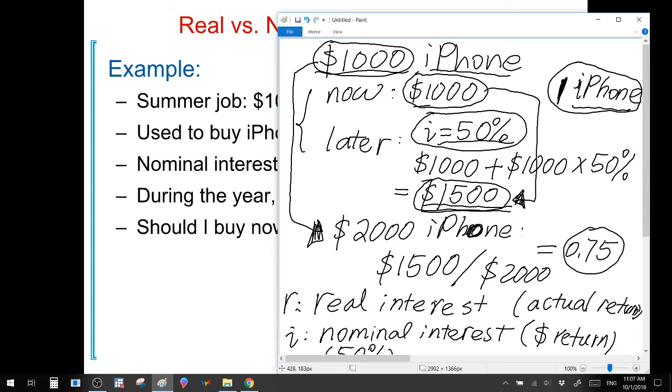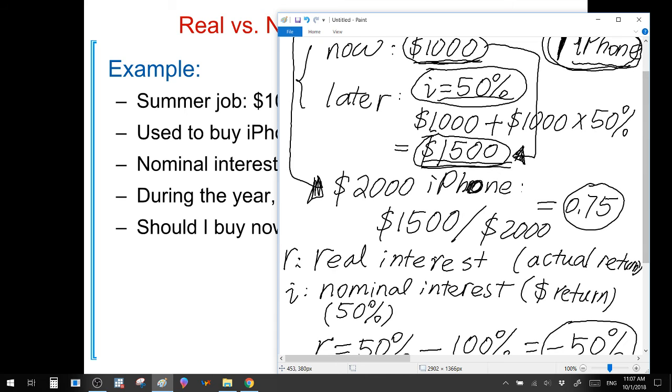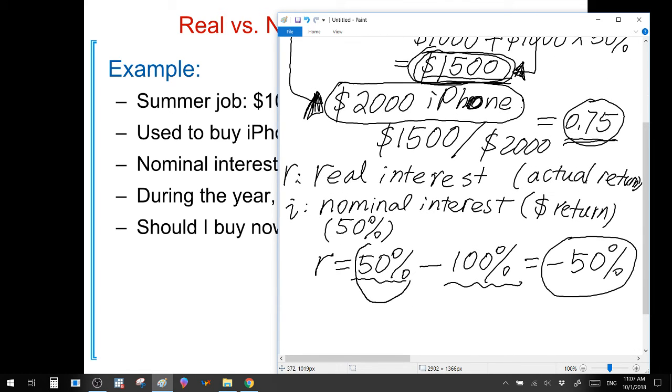Because if we buy the iPhone now, we spend $1,000 on a $1,000 iPhone, we can purchase one iPhone. If we postpone our purchasing decision, our money grows to $1,500 in the saving account, while the price of iPhone grows to $2,000, and we can only afford 0.75 iPhone at the end of the year. Therefore, although we are getting 50% nominal return in our bank account, it is not enough to compensate for the 100% rise in the price of iPhone.